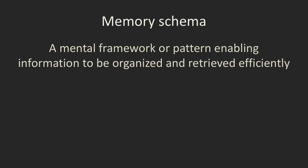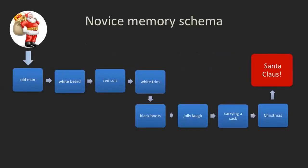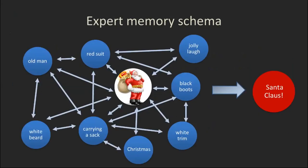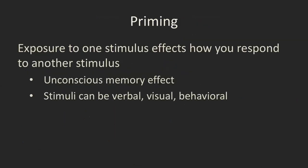As we encode and consolidate information through chunking, we develop what are called memory schemas — complex frameworks that allow us to very efficiently organize and retrieve memory. As we develop from novice to expert, our schemas become more complex but better at retrieving information from different entry points. A novice identifying Santa Claus may need to go through a very linear pathway, whereas an expert can look at any single attribute — black boots, a sack of toys — and immediately make those connections to arrive at the answer.